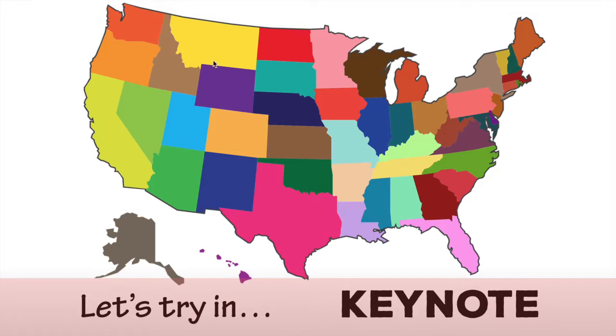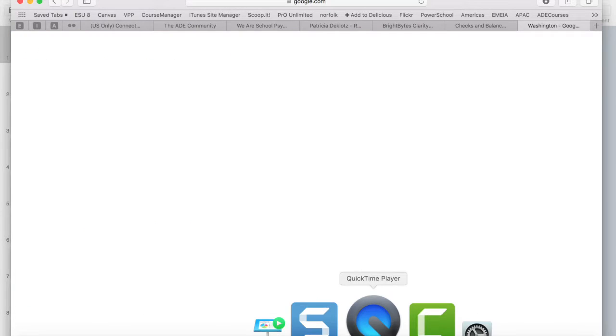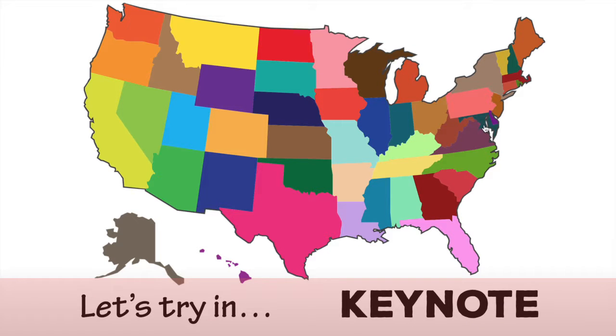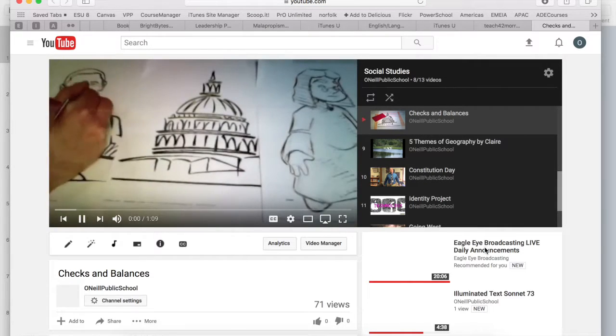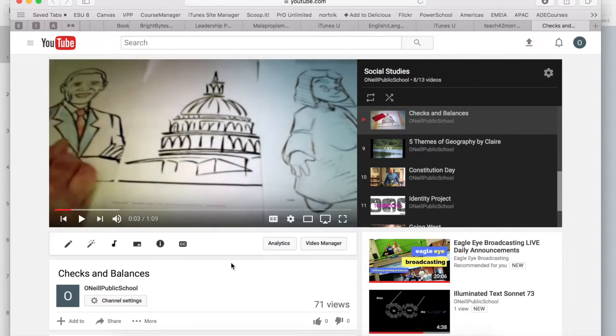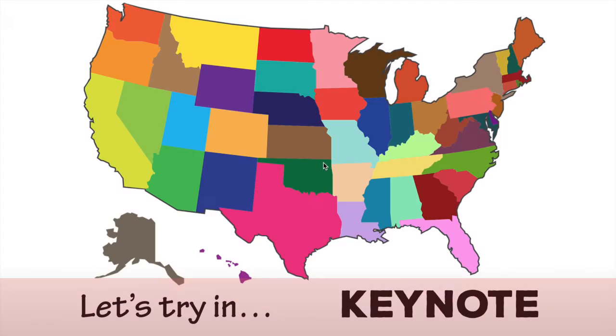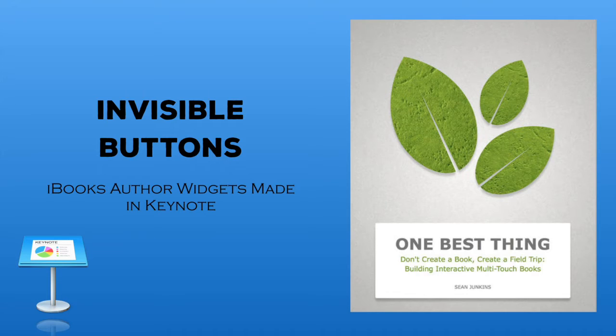Let's hit play and see how it turned out. Hovering over the map does nothing until I find a shape that has a hyperlink — clicking it takes me out to that website. After it loads I can close the site and return to Keynote. The Washington DC circle link takes me to the student project on YouTube. Finally, hovering over the edges of California and clicking takes me back to the previous slide. There you have it — invisible buttons in Keynote.